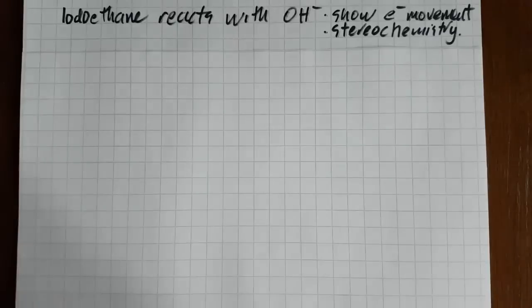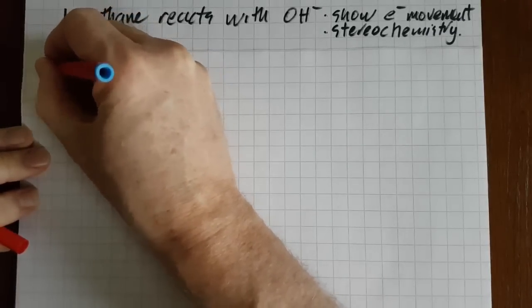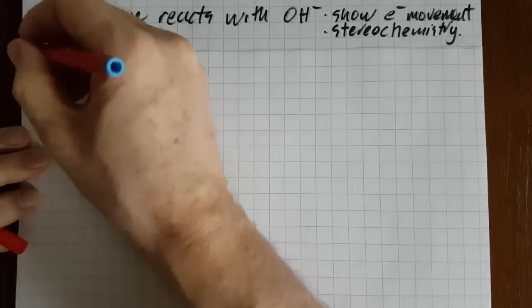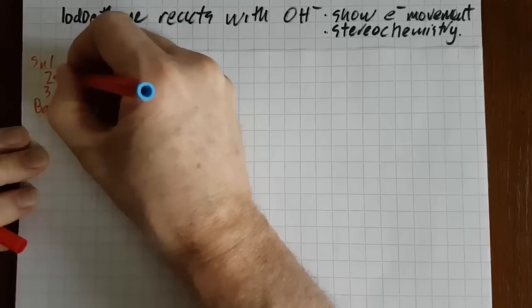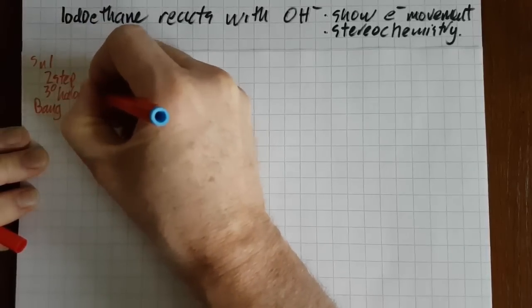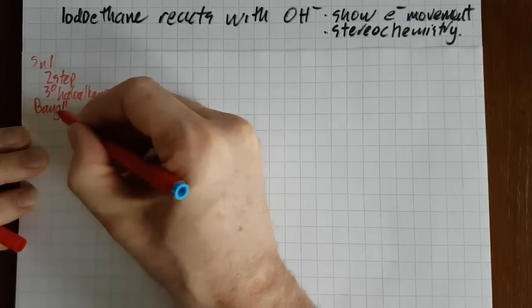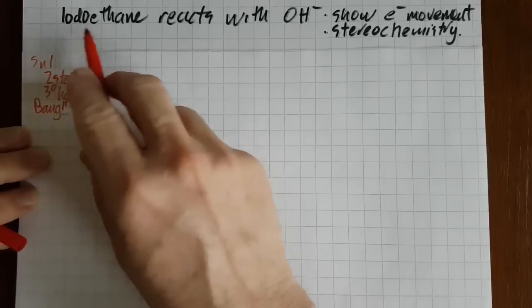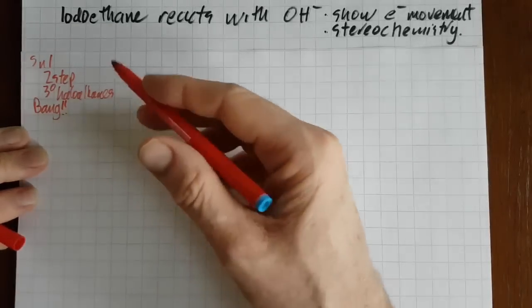So is it SN1 or is it SN2? Well hopefully you remembered 1, 2, 3, bang. SN1 is a two-step process with tertiary haloalkanes. Well iodoethane is not a tertiary haloalkane, it's a primary haloalkane.